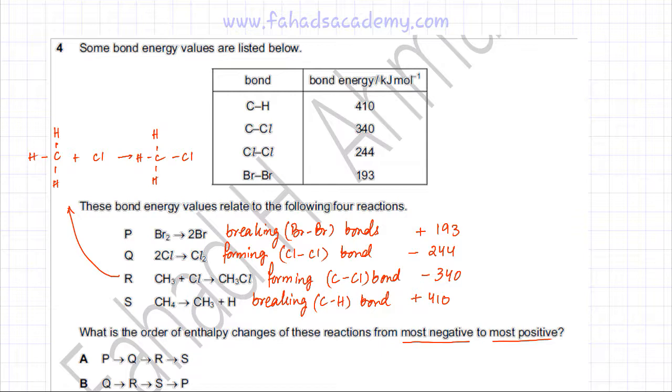Now I have the enthalpy changes of all the reactions, and I'm going to start with the most exothermic. The most exothermic one is going to be this one over here, so let's number it 1. We're going to move to the most endothermic. This is 2, then this is 3, and this is the 4th, which is the most endothermic. So it's going to be R, then Q, then P, and then S.